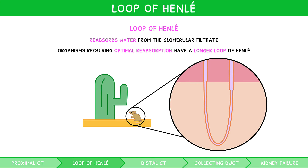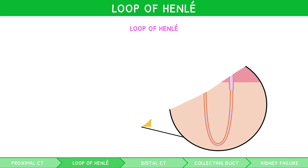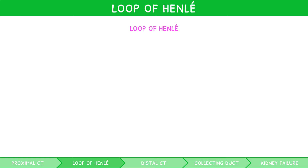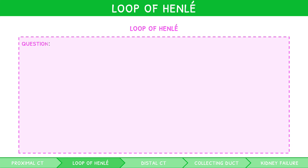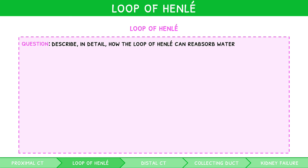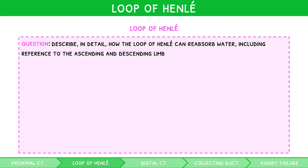The function of the loop of Henle is frequently tested in long answer questions. Let's take a minute to review an example. Describe in detail how the loop of Henle can reabsorb water, including reference to the ascending and descending limb. Remembering to include at least six phrases for a six marker, we could say: